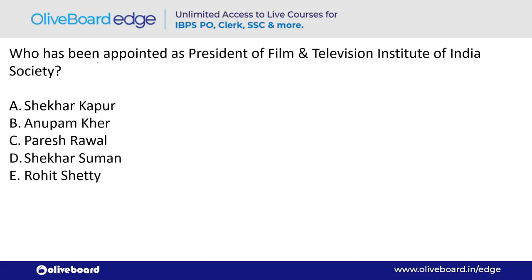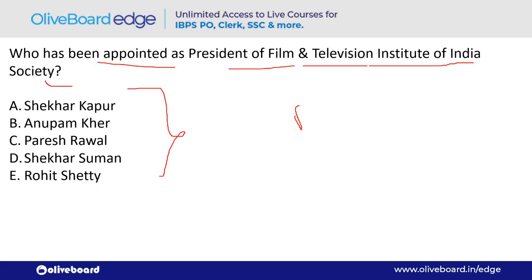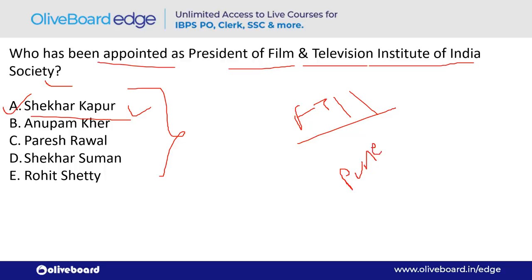Who has been appointed as President of the Film and Television Institute of India (FTII)? The answer is Shekhar Kapoor — option A. FTII's headquarter is in Pune, Maharashtra.